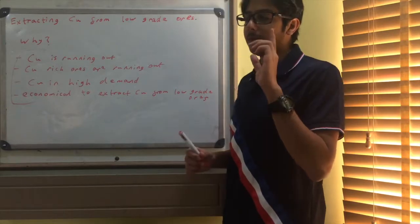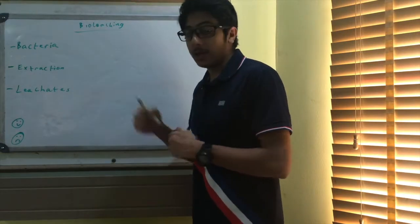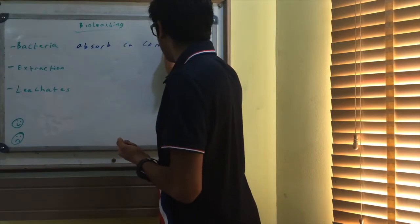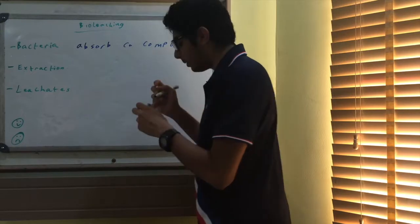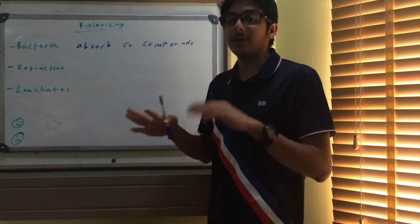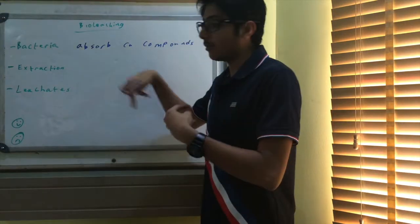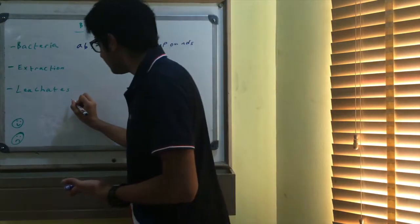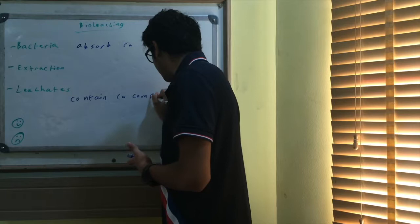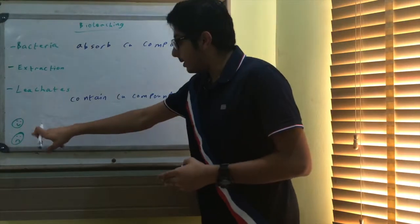Now we're going to talk about bio-leaching first. The main thing is that we use bacteria, and these bacteria absorb the copper compounds. These bacteria live by using the energy of the bond between sulfur and copper, and that's what separates the metal from the ore. We just need to know that the bacteria absorb the copper compounds, and that's what extracts it from the ore. This produces solutions called leachates, which contain the copper compound, and then we extract the copper from these copper compounds, usually by electrolysis.